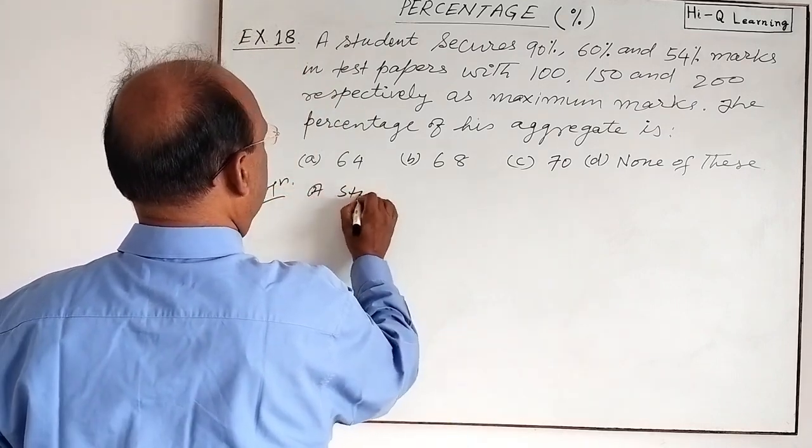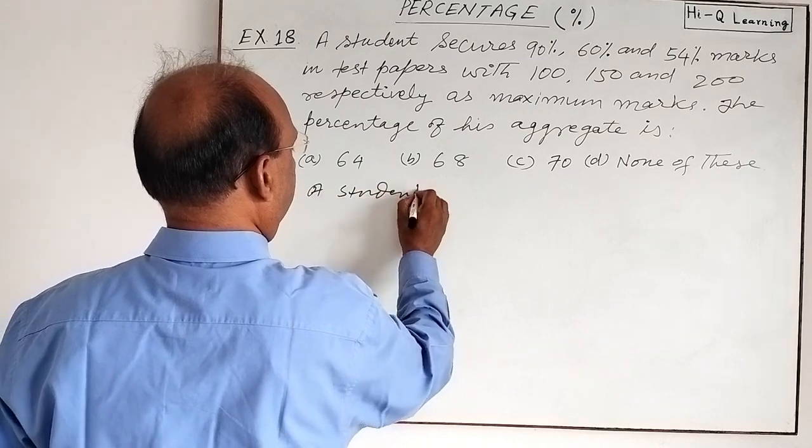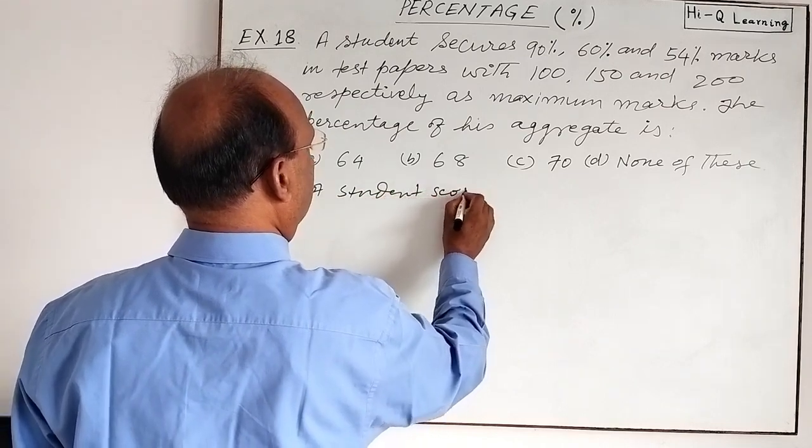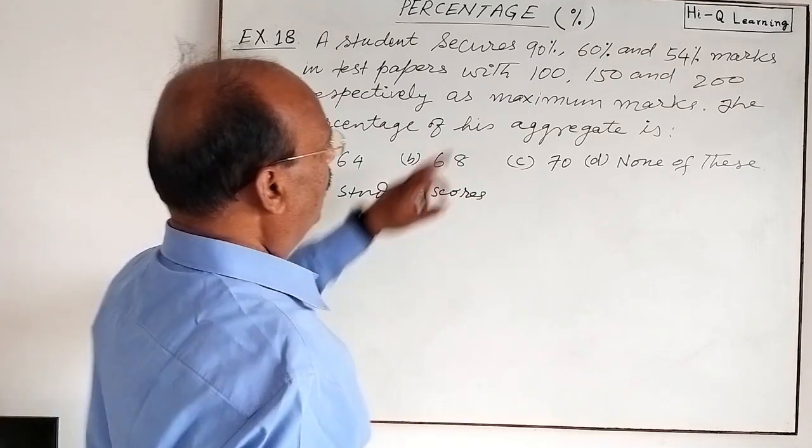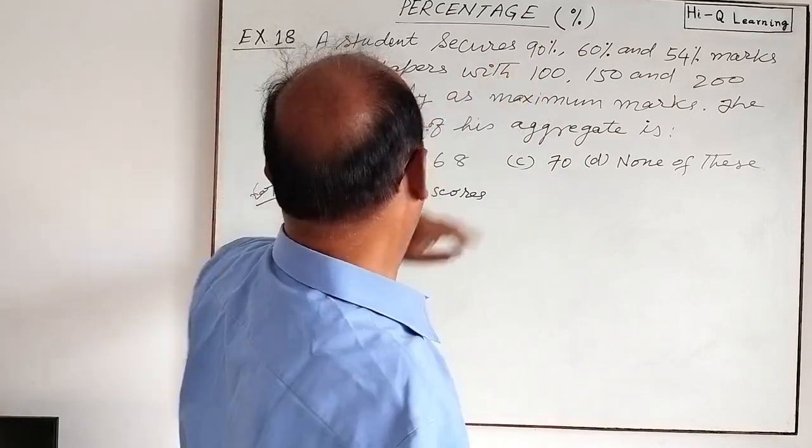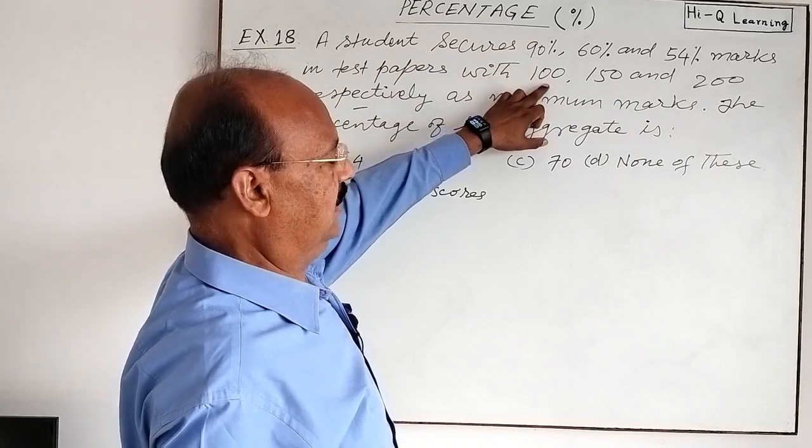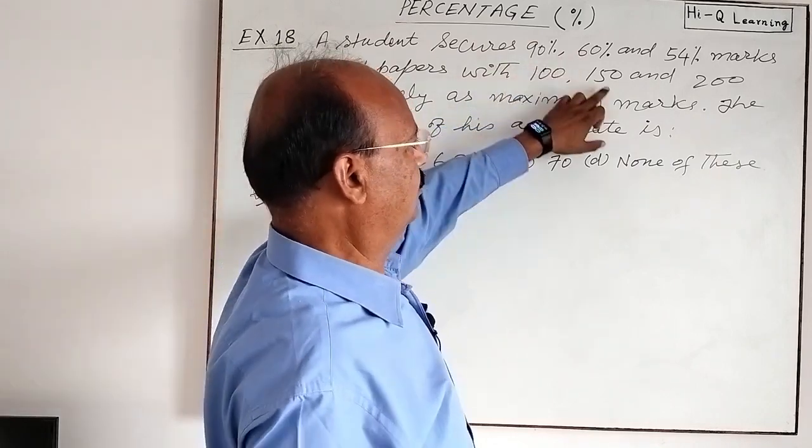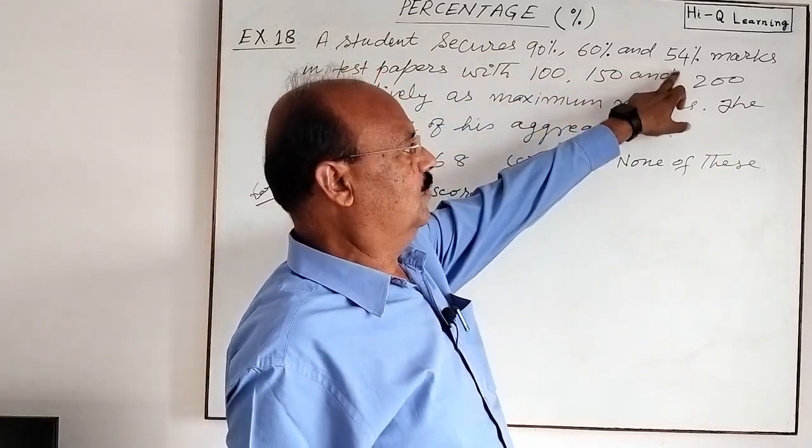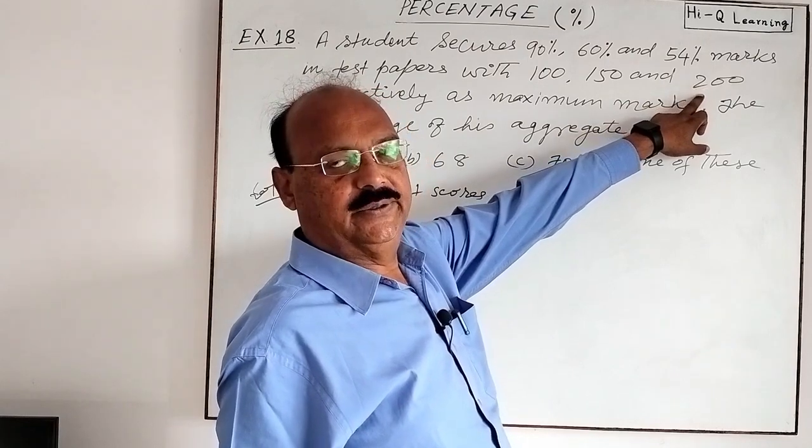A student scores 90%, you see this one respectively. So he secures 90% of 100, 60% of 150, and 54% of 200, correct?